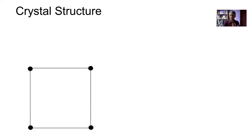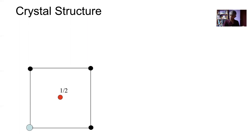Once I start to put atoms on a particular lattice point I've got to do that for every single lattice point, because the definition of a lattice point is that the environment around that point is identical no matter which lattice point you observe. So here I'm putting a red and a blue atom. The blue atom is located at 0 and 1, and the red atom is located at the body center at a height of half. I've now got to repeat this pair of atoms for every single lattice point.